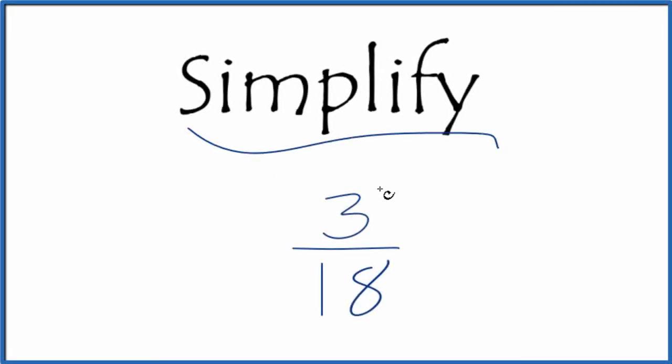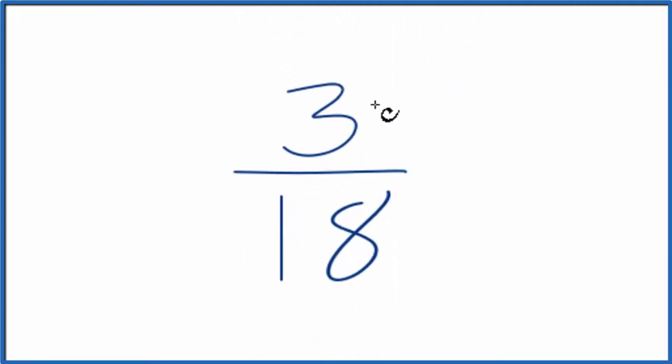If you need to simplify the fraction 3/18, here's how we do it. What we're trying to do is find another fraction that is equivalent to 3 over 18. It has the same value, we've just reduced it to its lowest terms.